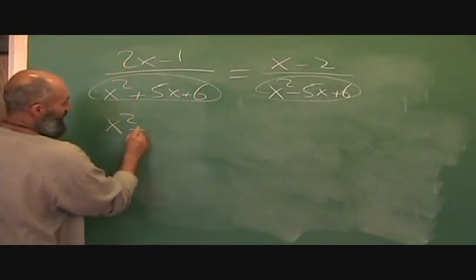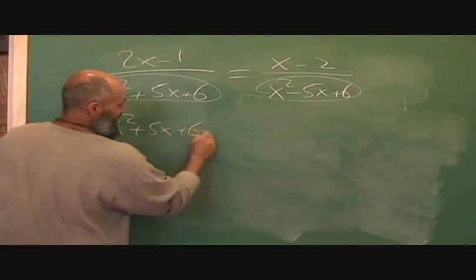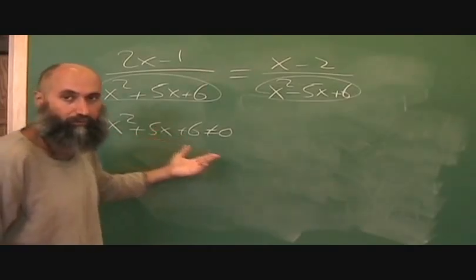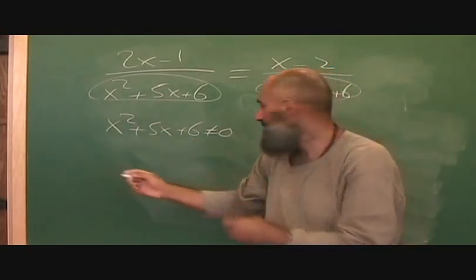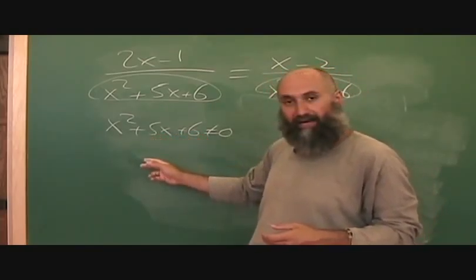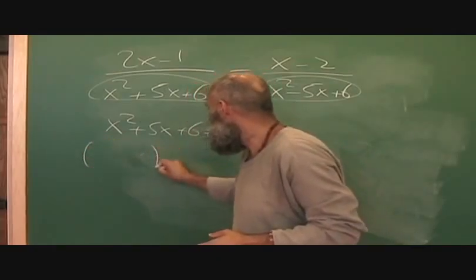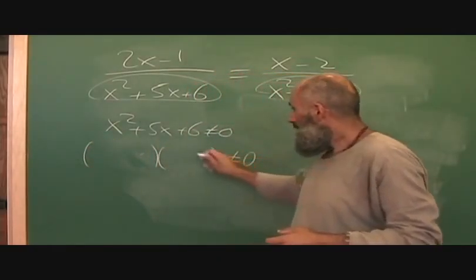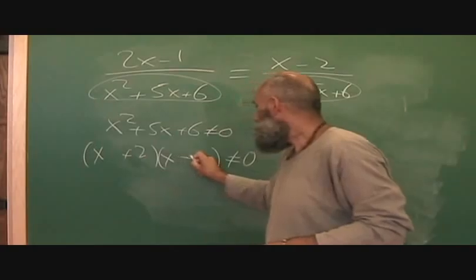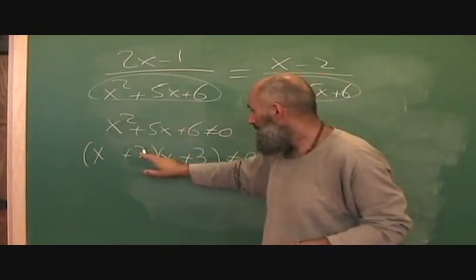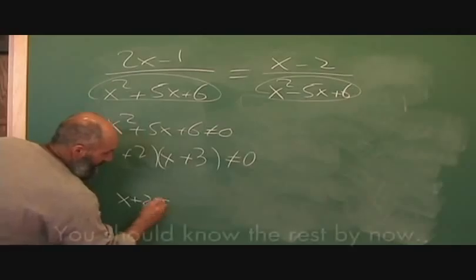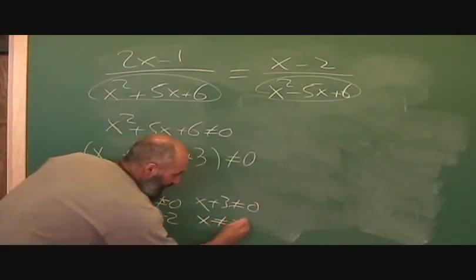So x squared plus 5x plus 6 can't equal zero. You factor this simple trinomial: you're looking for two numbers that multiply to give you 6 and add up to give you positive 5. That factors to (x plus 2)(x plus 3). You then set each factor not equal to zero, so x plus 2 can't equal 0 gives x can't equal negative 2, and x plus 3 can't equal 0 gives x can't equal negative 3. Those two are your restrictions for this side.